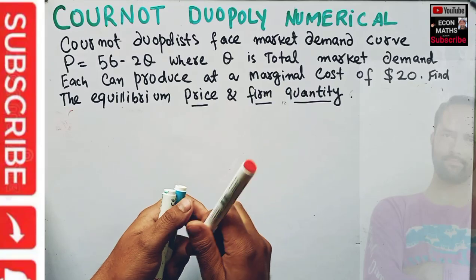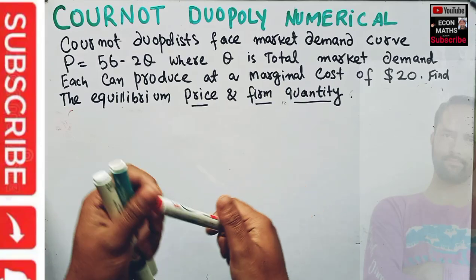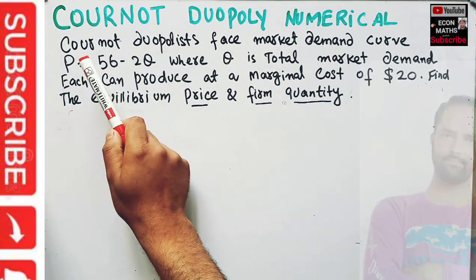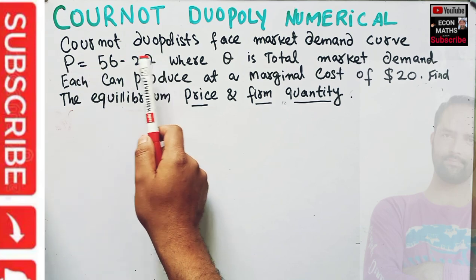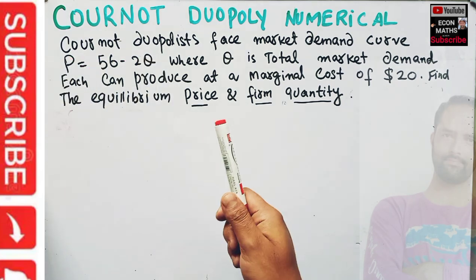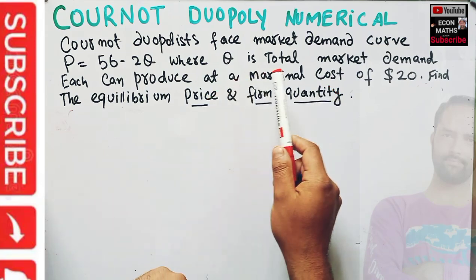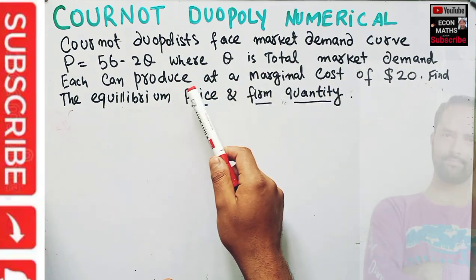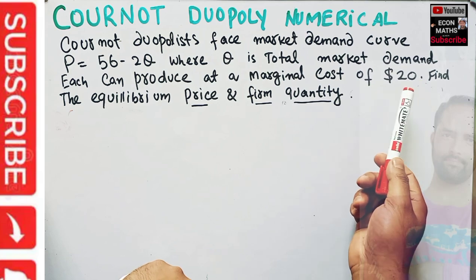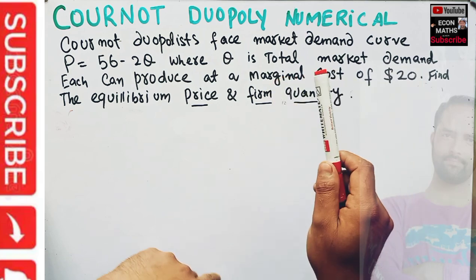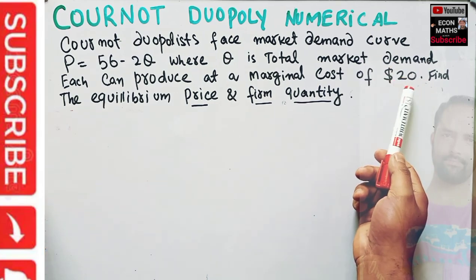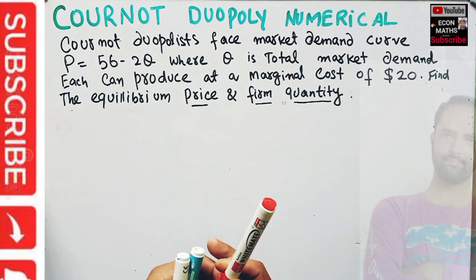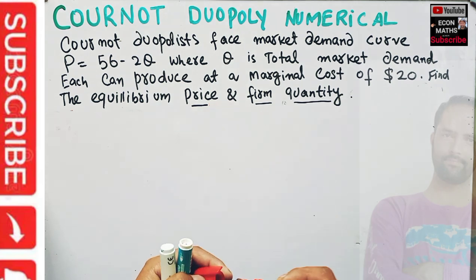Let us solve a numerical problem on Cournot duopoly. This question was asked on a telegram channel of econometrics. The question is: Cournot duopolists face a market demand curve P = 56 - 2Q, where P is the price and Q is the total quantity demanded. Each firm produces at a marginal cost of $20, meaning the cost function of each firm is constant. We need to find the equilibrium price and the quantity each firm produces.